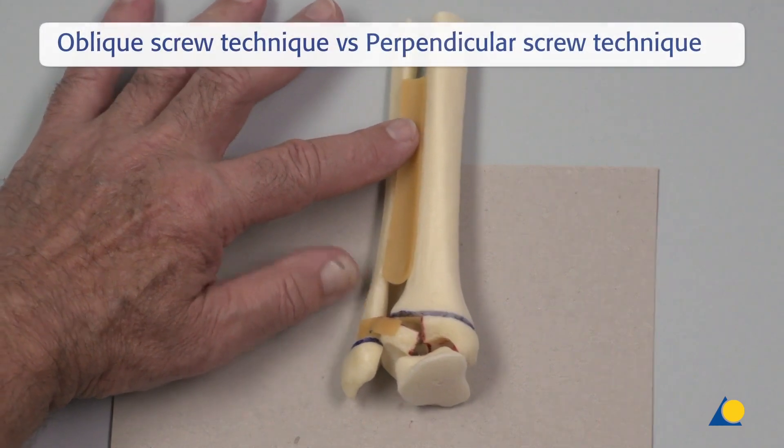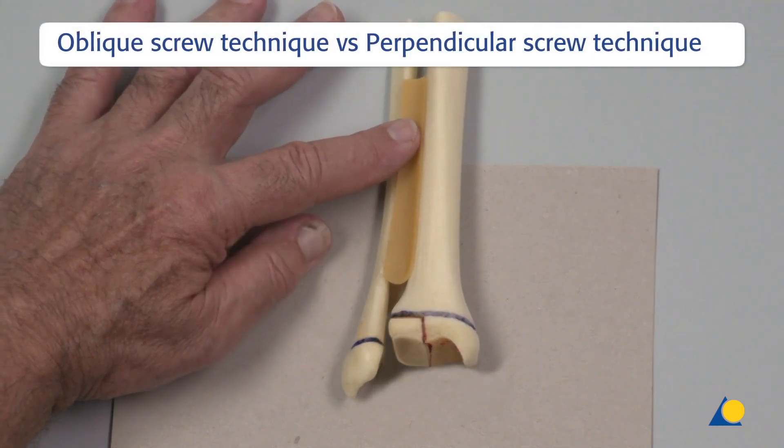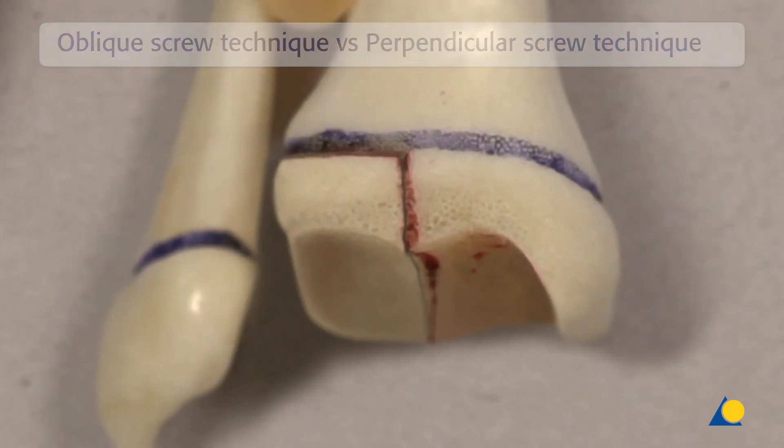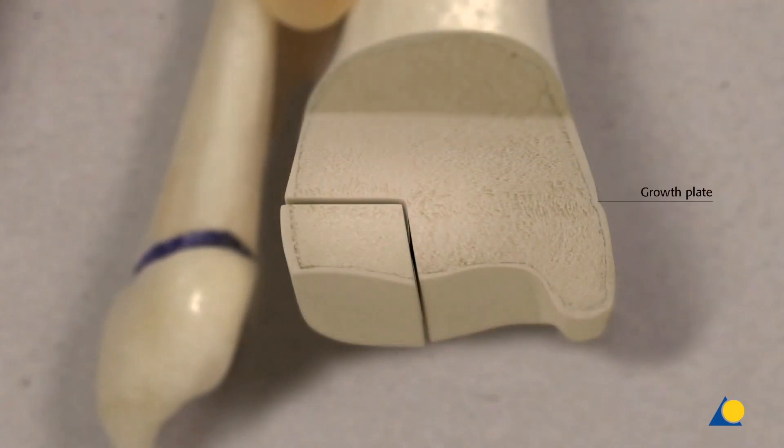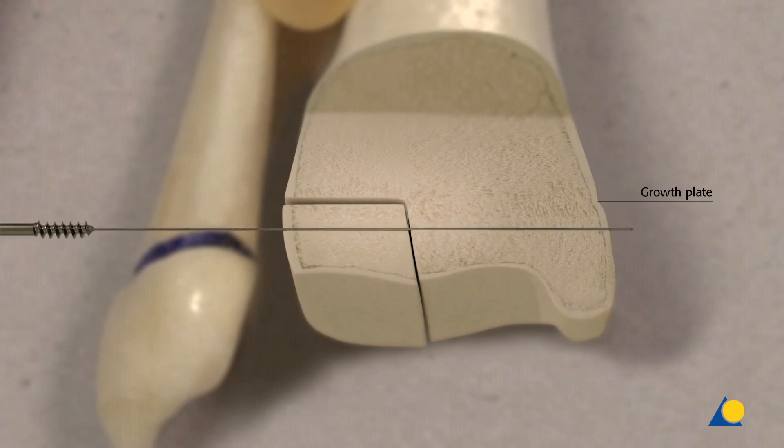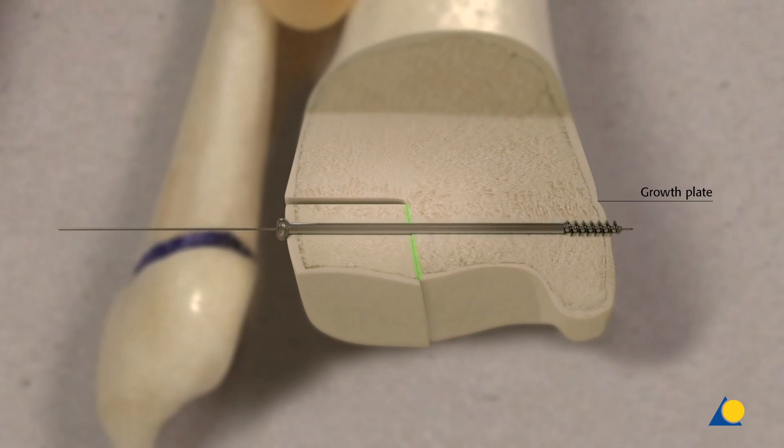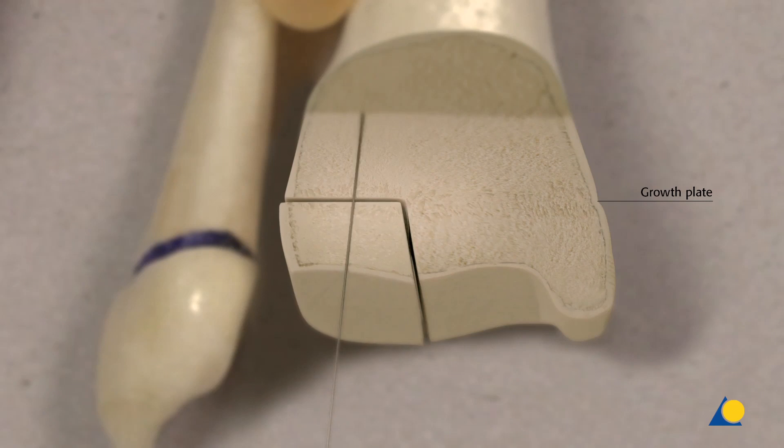In theory, the fragment displacement can be resolved using a perpendicular screw technique in relation to the Salter-Harris type 3 fracture line. This provides good compression of the fragment medially. However, if the fragment still has a step in the joint surface, this step will have been fixed and is a pre-arthrotic condition.